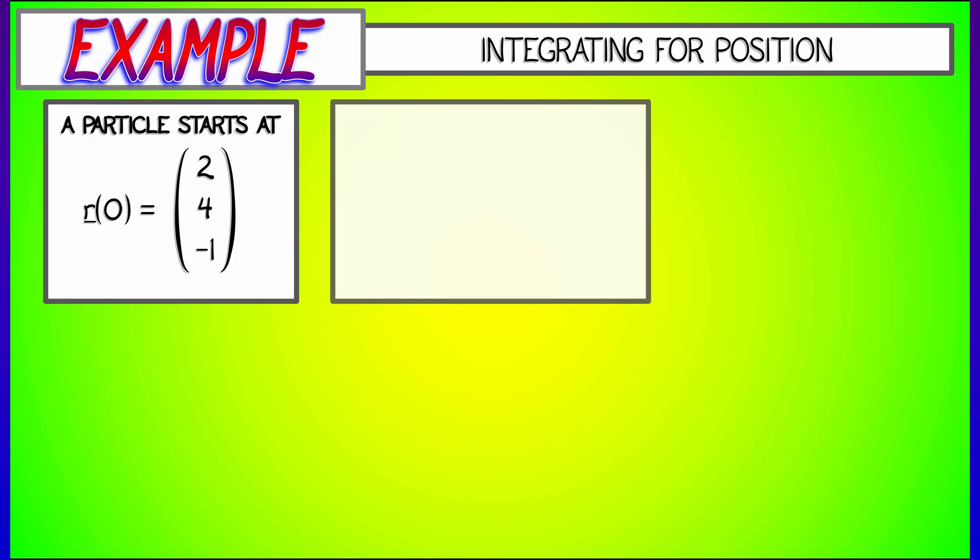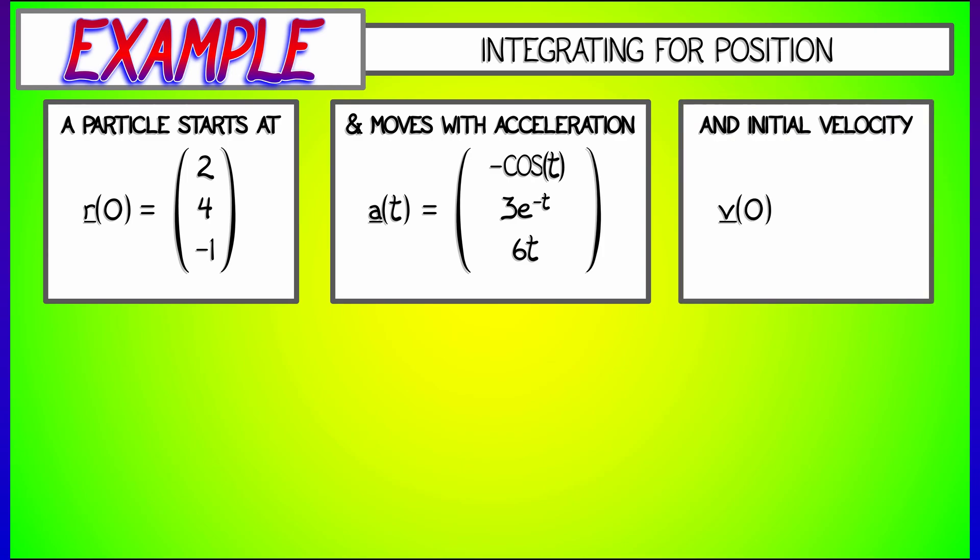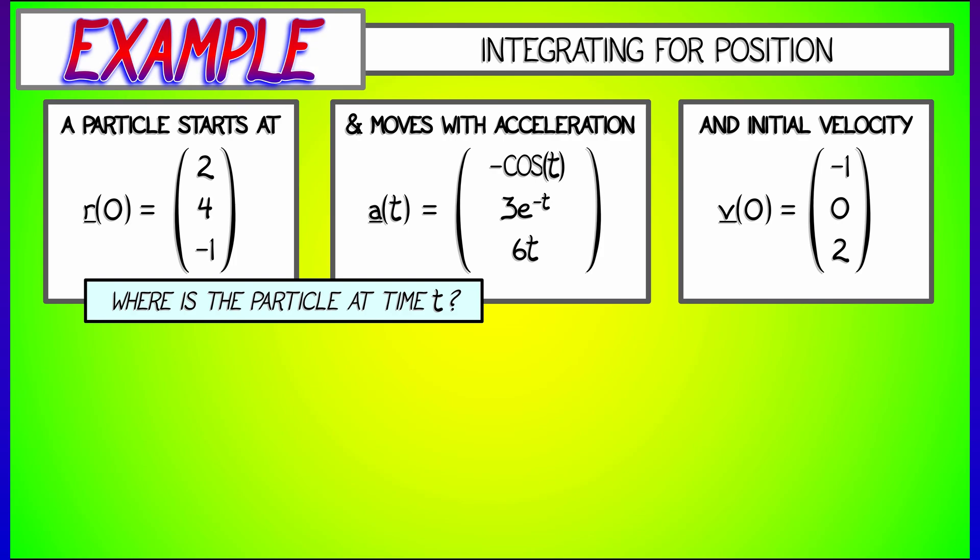Then I'm going to tell you the acceleration vector as a function of time t: minus cosine t, 3e to the minus t, 6t. If I also give you the initial velocity vector, so the velocity v at time zero, with components negative one, zero, and two, then the problem is, what is the position vector as a function of time t?